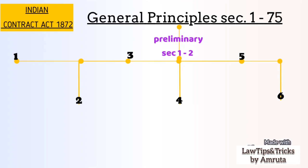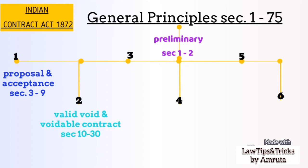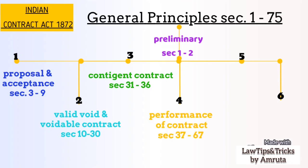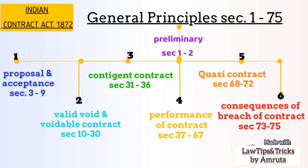Chapter 1: Proposal and Acceptance, from section 3 to 9. Chapter 2: Valid, Void, and Voidable Contract, from section 10 to 30. Chapter 3: Contingent Contract, from section 31 to 36. Chapter 4: Performance of Contract, from section 37 to 67. Chapter 5: Quasi Contract, from section 68 to 72. And Chapter 6: Consequences of Breach of Contract, from section 73 to 75.